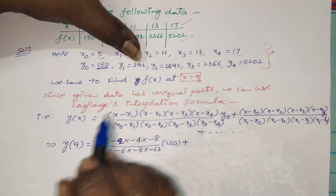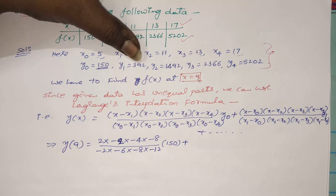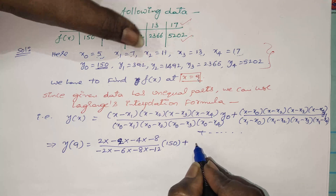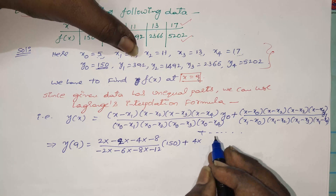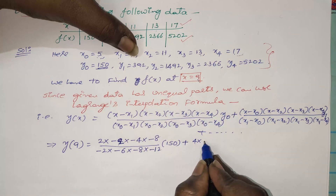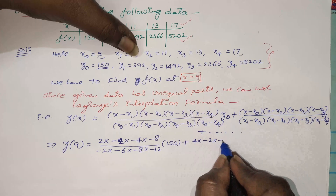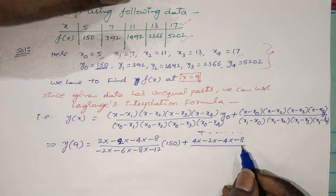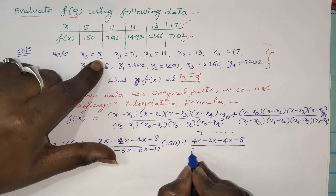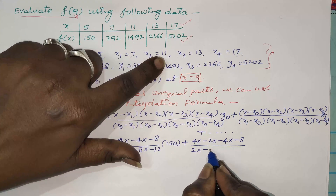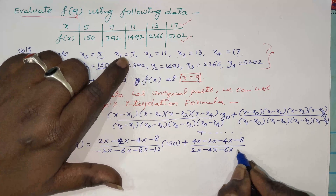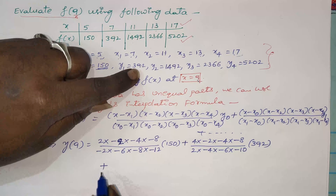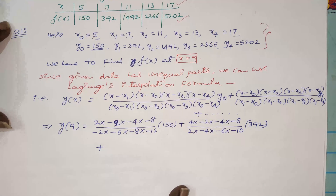For the second term, skip x1 equals 7 and compute: 9 minus 5 equals 4, 9 minus 11 equals minus 2, 9 minus 13 equals minus 4, 9 minus 17 equals minus 8. In the denominator from x1 equals 7: 7 minus 5 equals 2, 7 minus 11 equals minus 4, 7 minus 13 equals minus 6, 7 minus 17 equals minus 10. Multiply by y1 equals 392.